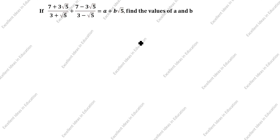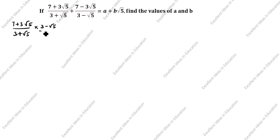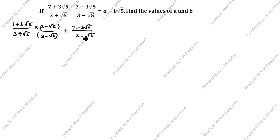What is given in this question? (7 + 3√5) / (3 + √5) — you see the denominator is given as plus. So what we will do? Rationalize the denominator: multiply by (3 - √5) / (3 - √5). Plus (7 - 3√5) / (3 - √5) — here you see the denominator is given as minus, so rationalize by multiplying (3 + √5) / (3 + √5).